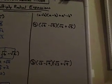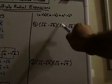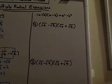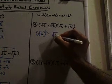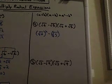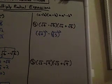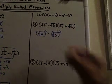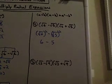Let's look at number 4. We have the square root of 6 minus 5 times the square root of 6 plus 5. The only difference is one is plus and one is minus. So our answer will be the square root of 6 squared minus 5 squared. The square root of 6 squared is 6, the square root of 5 squared is 5, and 6 minus 5 is 1.